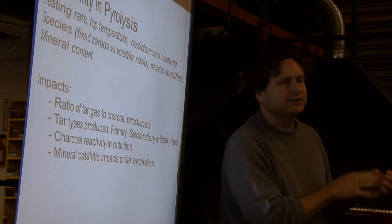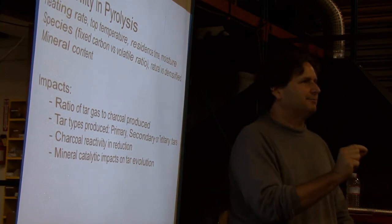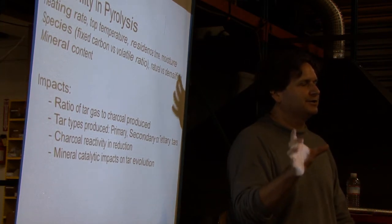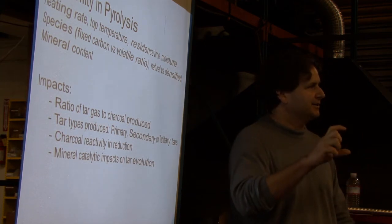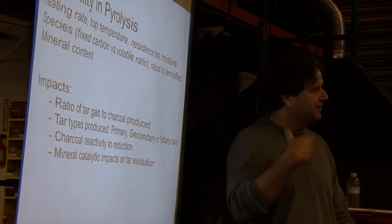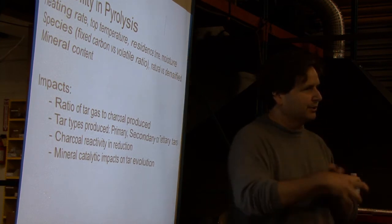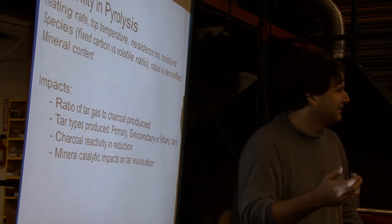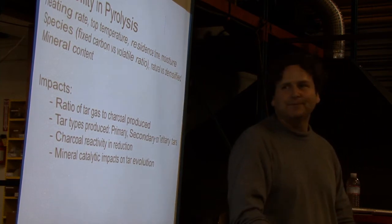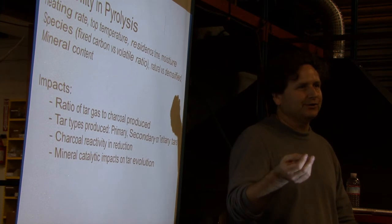Primary tars, they are literal fragments of the biomass that when broken off could exist as a gas separately. As they go to progressively higher temperatures, they start to recombine and they evolve into more complicated tars. The second type is called, helpfully, secondary tars. As the temperature continues to increase, you get more recombination.